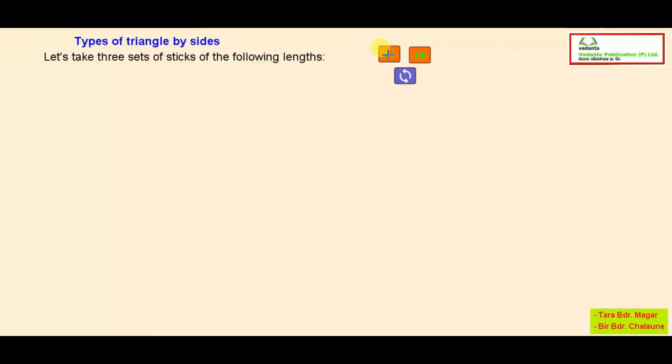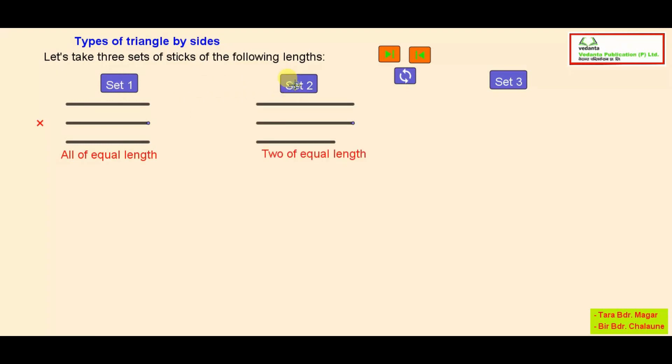Types of triangle by sides. Let's take three sets of sticks of the following lengths: all of equal length, two of equal length, none of equal length.